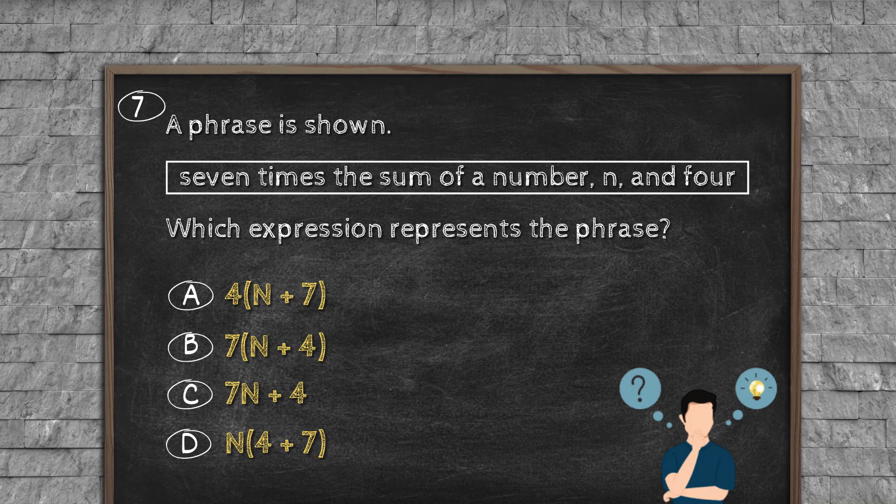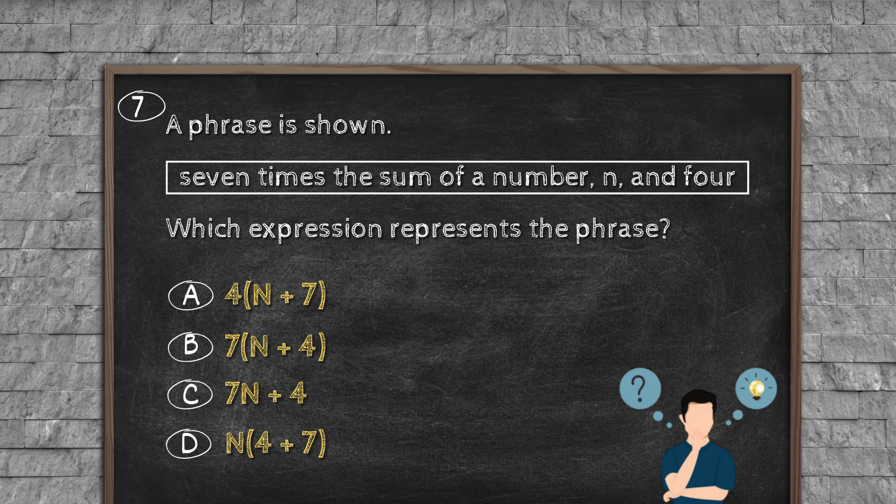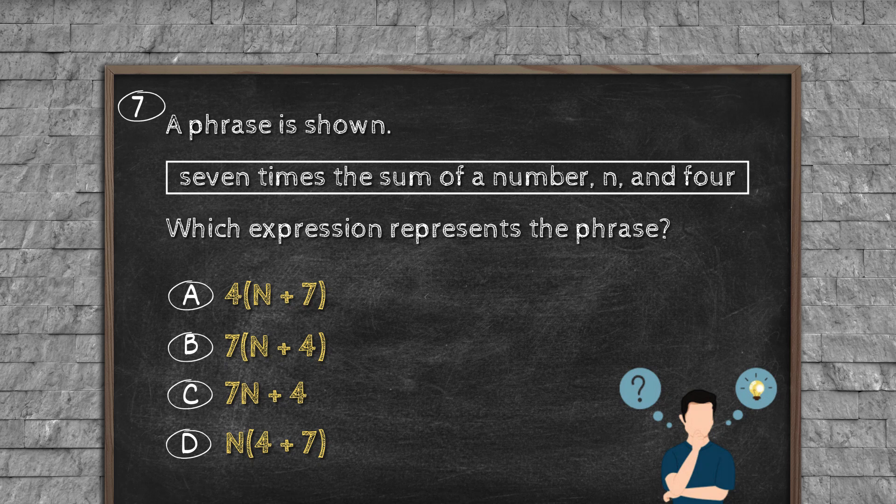Question number seven: The phrase is shown: Seven times the sum of a number n and 4. Which expression represents the phrase? Option A: 4(n + 7). Option B: 7(n + 4). Option C: 7n + 4. Option D: n⁴ + 7.